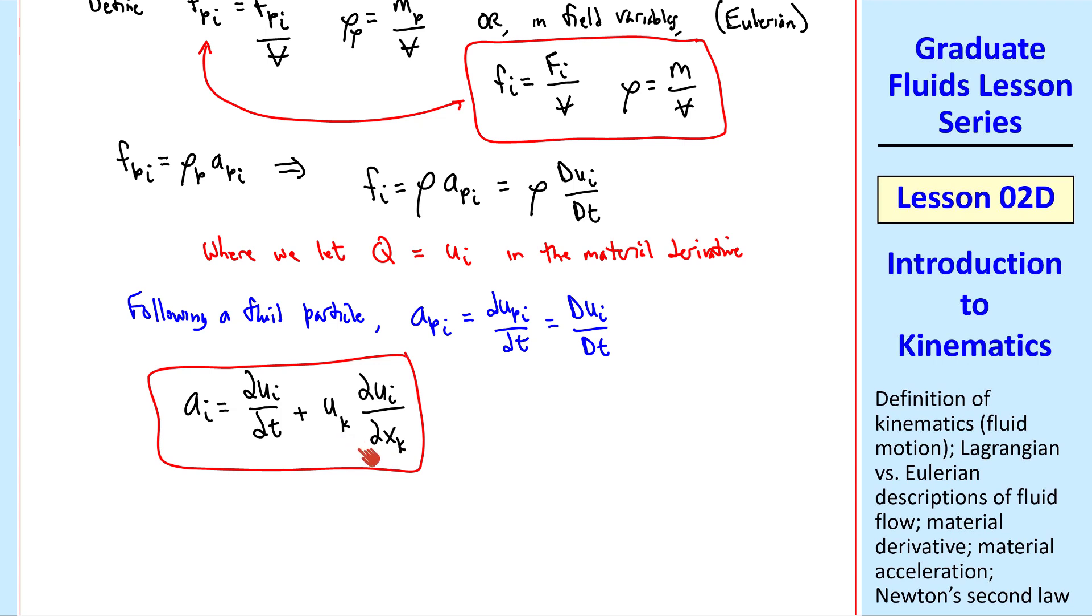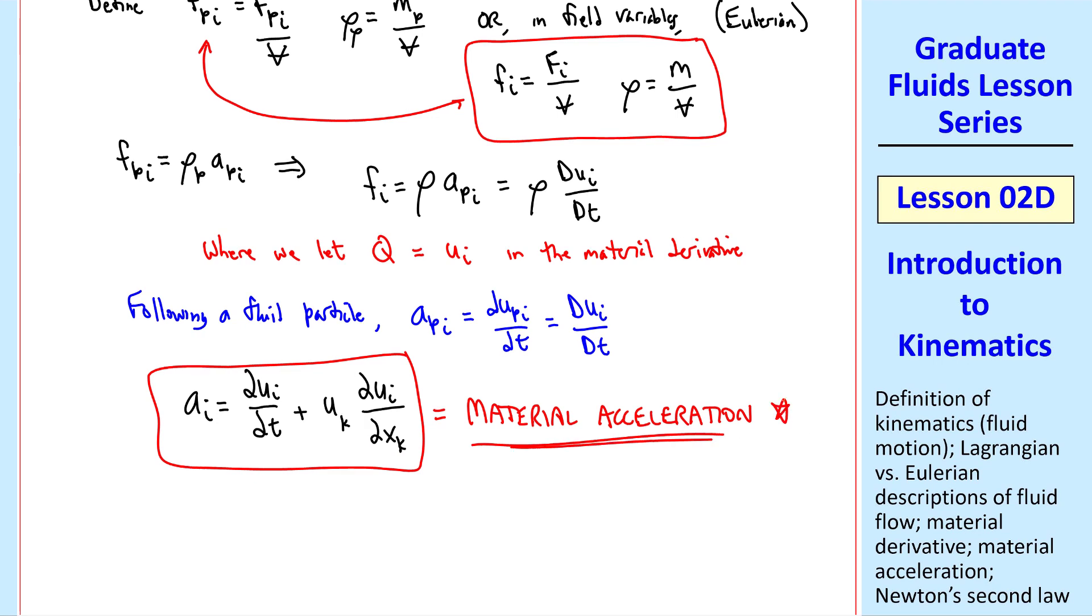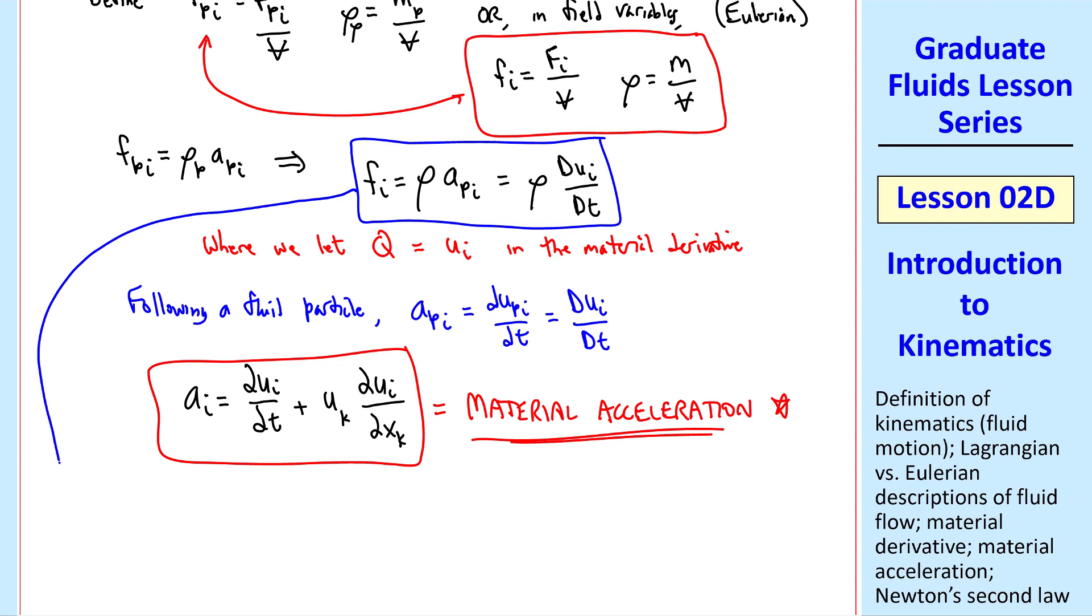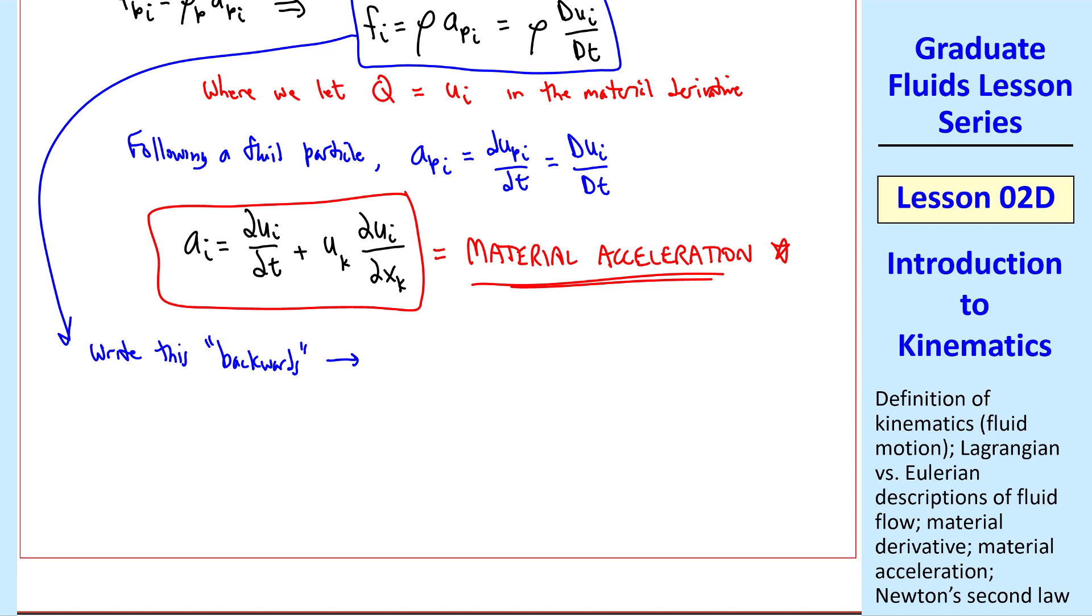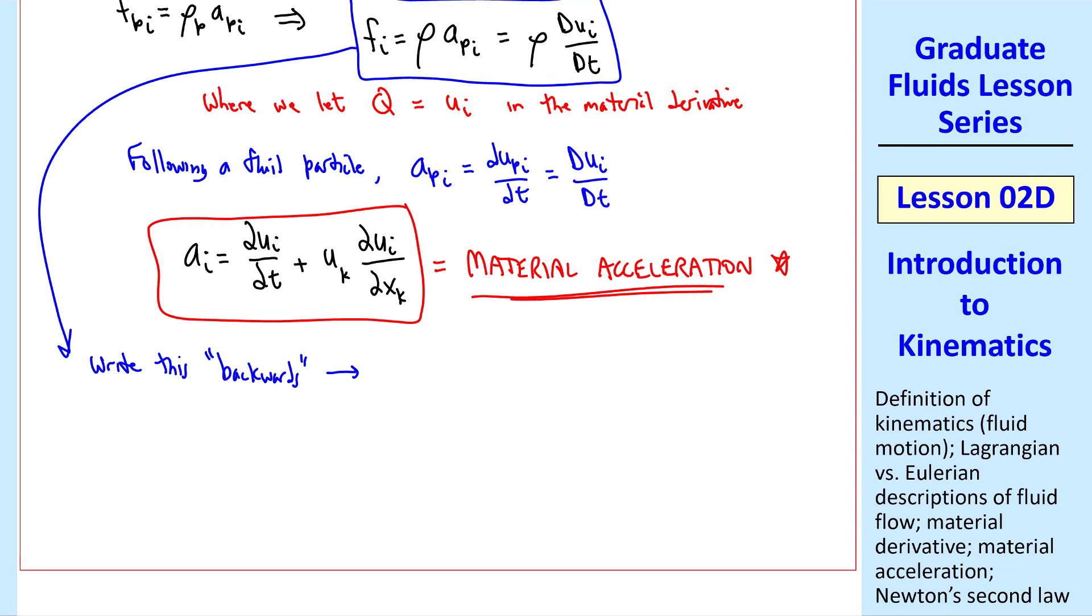You can now see why I changed this dummy index from i to k. This is thus the material acceleration, which is the acceleration following a fluid particle. So this is our expression of Newton's second law in terms of material acceleration. For some reason, fluid mechanics people like to write Newton's law backwards, where rho dui dt equal fi. Combining these, we write rho del ui del t plus uk del ui del xk equal fi.